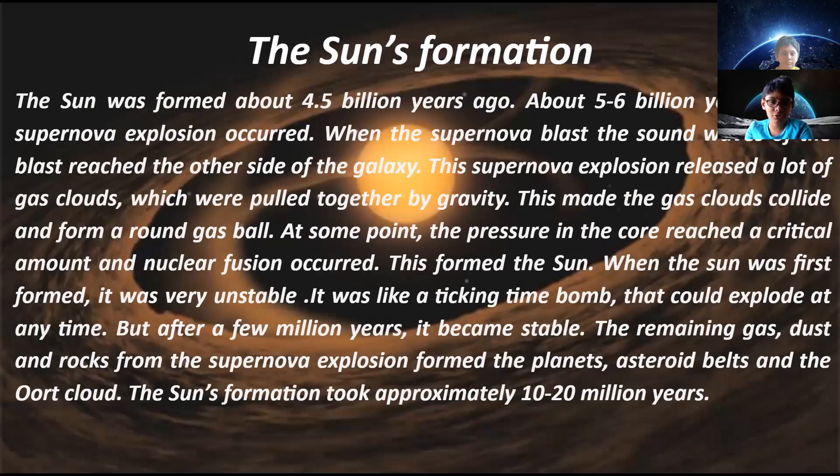The remaining gas, dust and rocks from the supernova explosion formed the planets, asteroid belts, and the Oort Cloud. The sun's formation took approximately 10 to 20 million years.